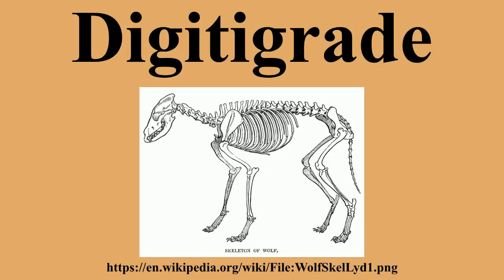A digitigrade is an animal that stands or walks on its digits. Digitigrades include walking birds, cats, dogs, and many other mammals, but not plantigrades or ungulagrades. Digitigrades generally move more quickly and quietly than other animals.